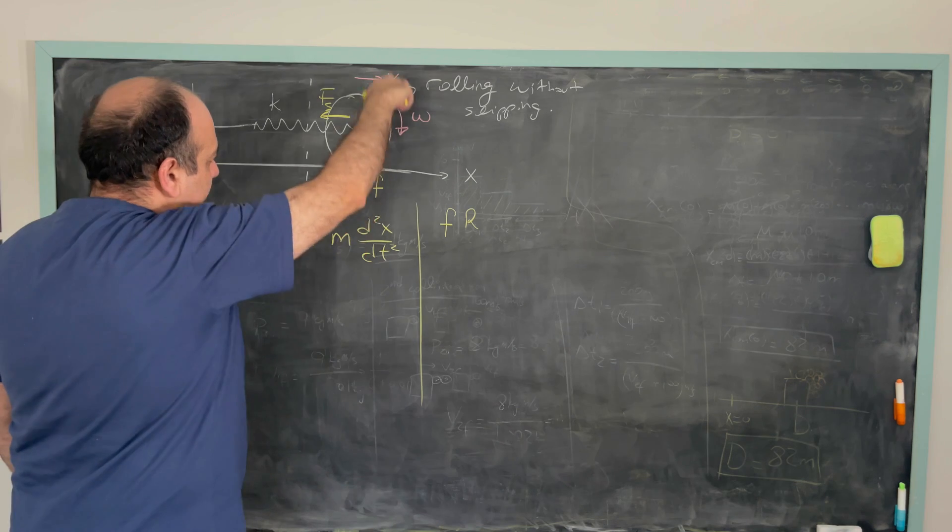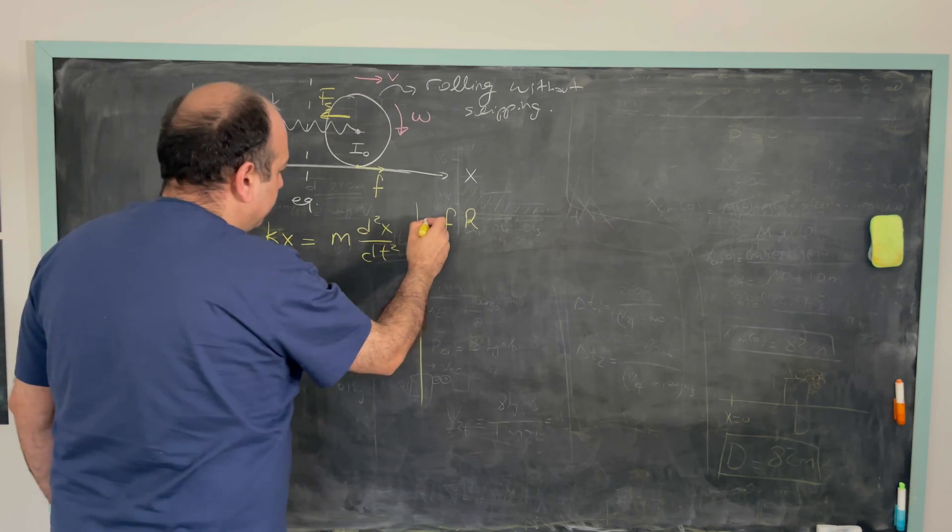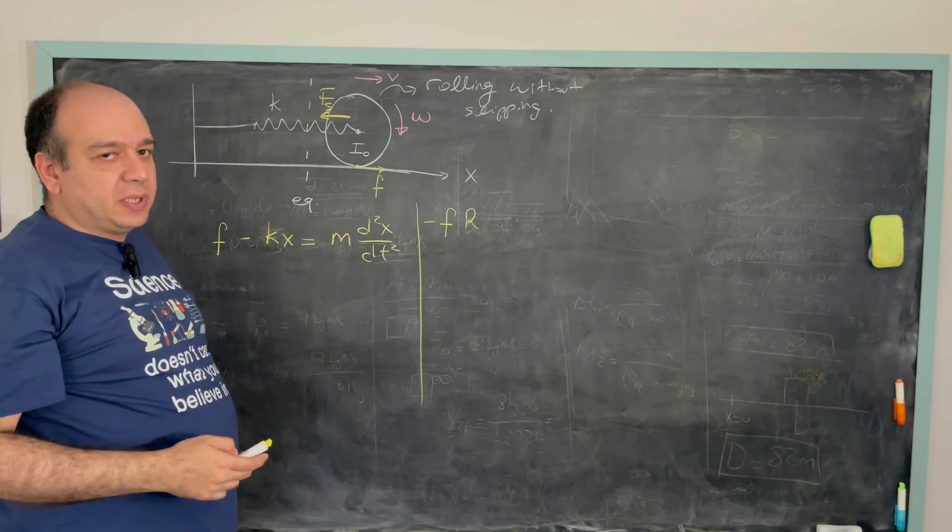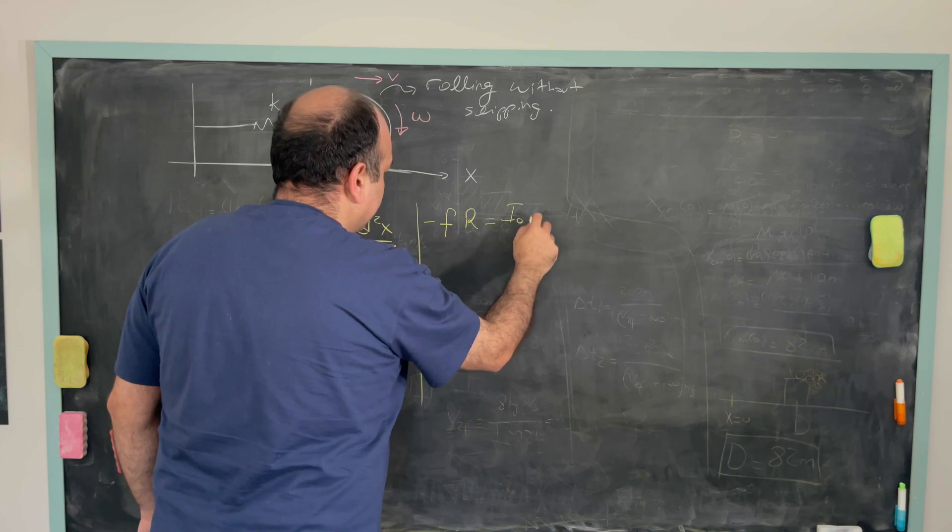However, this direction is my positive direction. So this torque is actually producing a negative torque. That's why I put a minus sign here. So this should be equal to I0 times alpha.